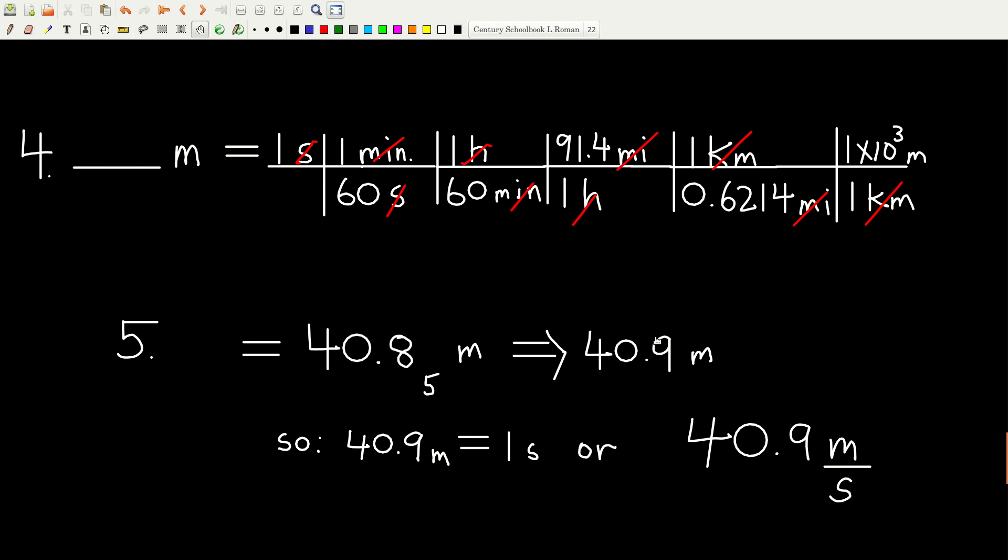What does that mean? That means that what we just calculated is how far that baseball will travel in one second. So 40.9 meters equals one second. Or now we can write our answer. The speed of that baseball is 40.9 meters per second.